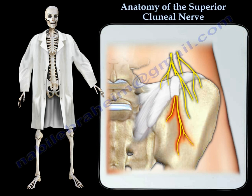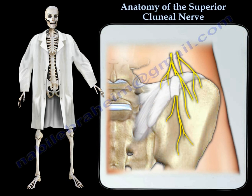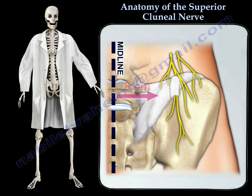When harvesting bone for bone grafting from the iliac crest, it is important to remember the placement of the superior cluneal nerves. The superior cluneal nerve can be injured if the incision exceeds eight centimeters from the midline or six centimeters lateral to the posterior superior iliac spine.